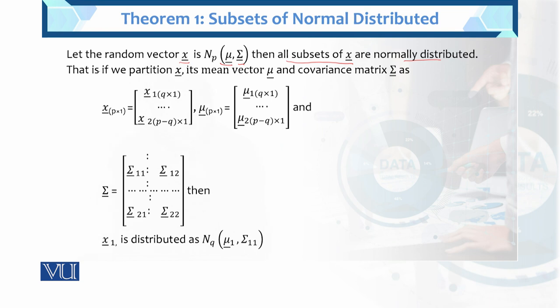If a partition of x has mean vector mu and variance-covariance matrix sigma, the vector x has dimension p×1. The subset x1 has dimension q×1, and the subset x2 has dimension (p−q)×1.